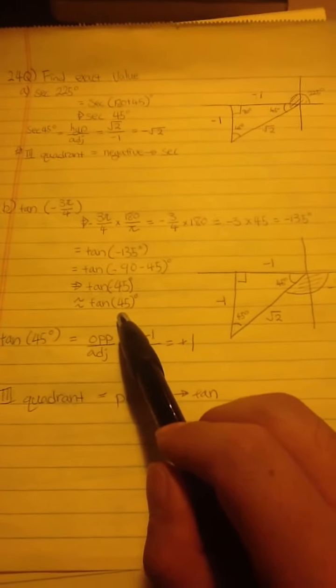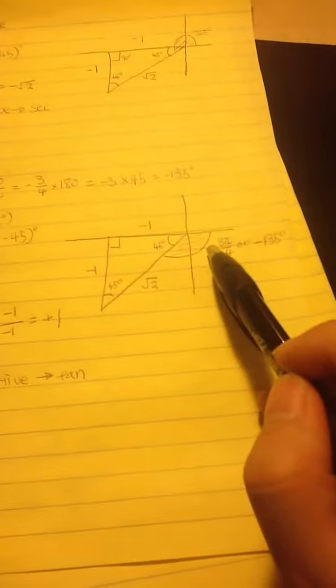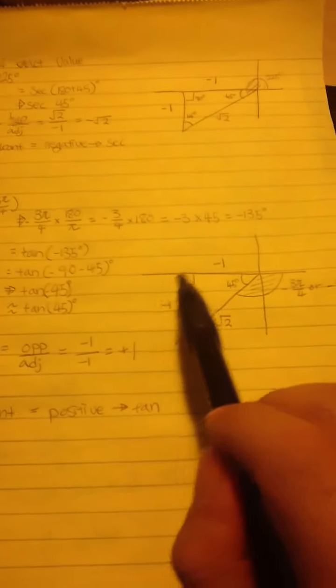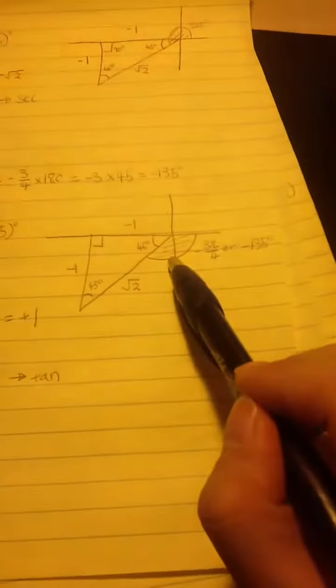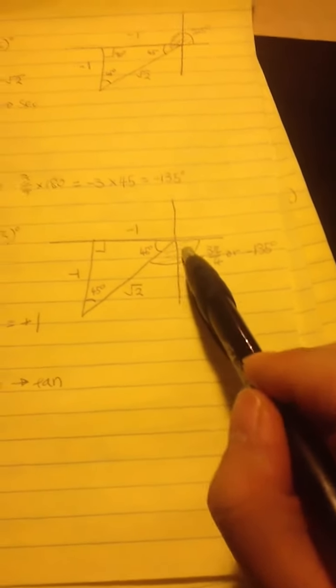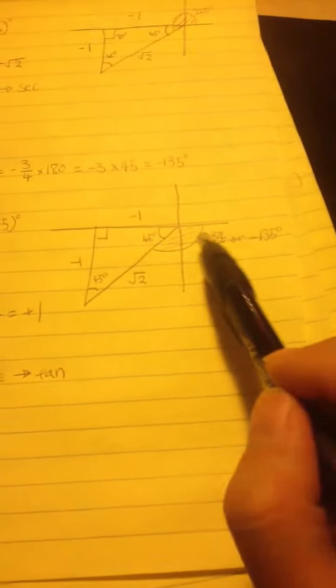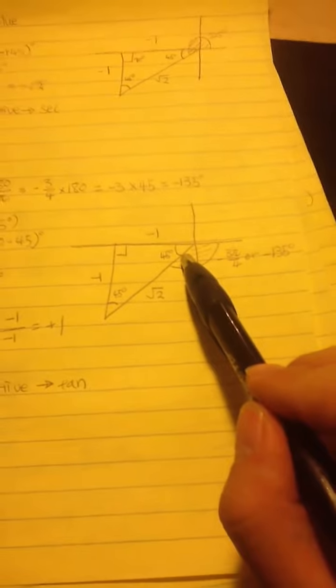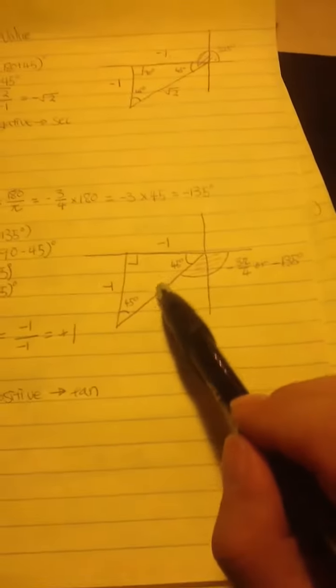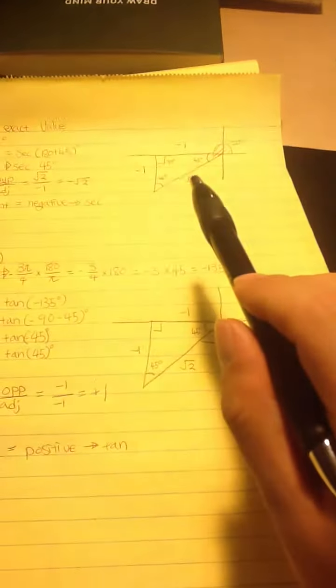And using this reference angle, I draw a triangle on the graph. Since it was negative 135 degrees, we have to go clockwise here, which is this. This is negative 3π over 4, or negative 135 degrees. And the reference angle here is 45 degrees again. And I drew another triangle, which is actually the same with the first question there.